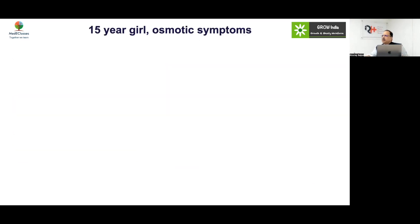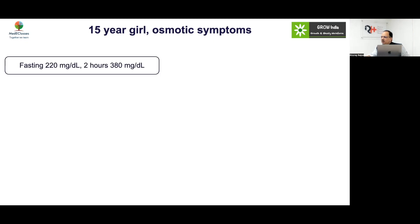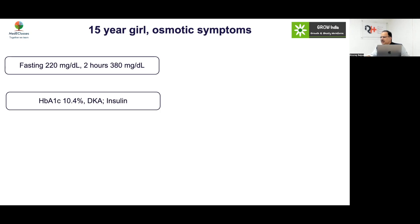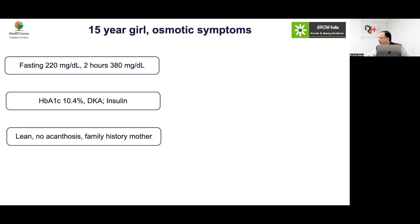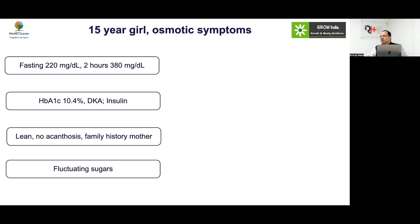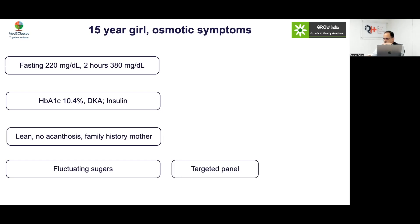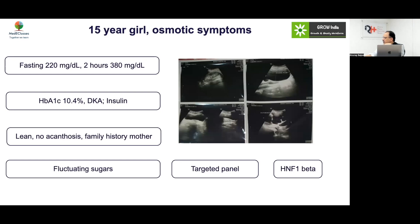Case: A 15-year-old lean girl with ophthalmic symptoms, high fasting and 2-hour glucose values, high HbA1c, DKA, no acanthosis, family history in mother. Her sugars were very erratic — sometimes very low, sometimes very high. Without insulin for two days sugars went high, then on insulin became very low. This fluctuating pattern combined with family history in the mother suggested a genetic form.